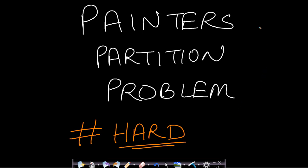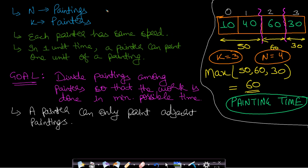Welcome back to Take Dose. In this video we will see the Painter's Partition Problem, which is a hard problem, so please watch carefully. We have n paintings and k painters, each with the same speed — in one unit of time a painter can paint one unit of a painting. Our goal is to divide the paintings among the painters so that the work is done in minimum possible time. A painter can only paint adjacent paintings.